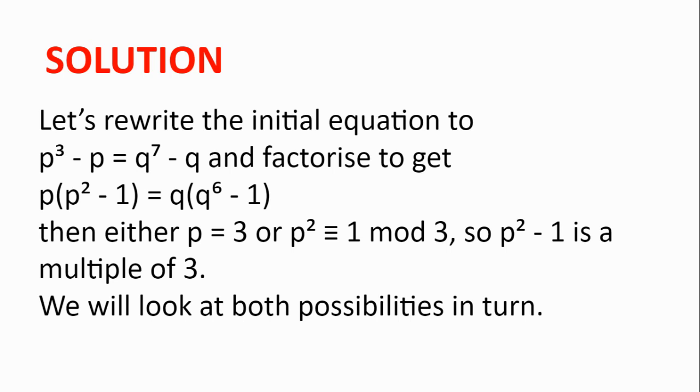Solution. Let's rewrite the initial equation to p³ - p = q⁷ - q and factorize to get p(p² - 1) = q(q⁶ - 1).